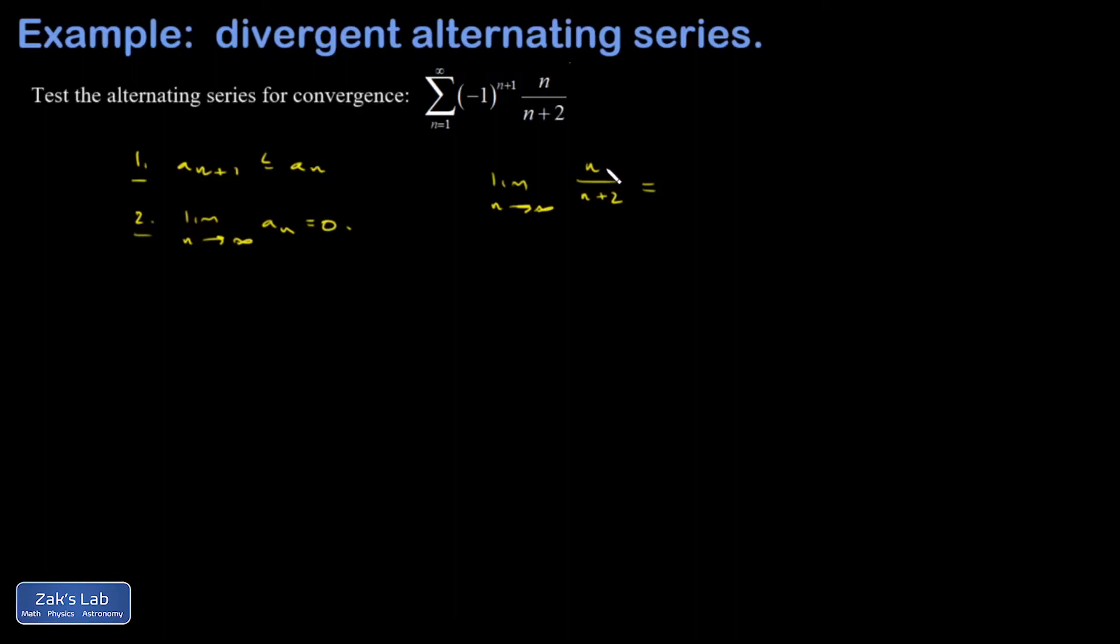All right, the casual way to look at this is that the highest power of n dominates the numerator and denominator. So approximately, this is just n over n, which is 1.